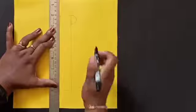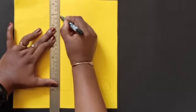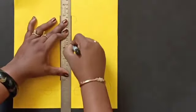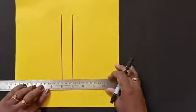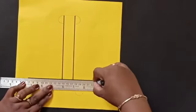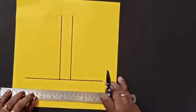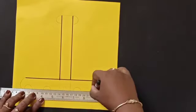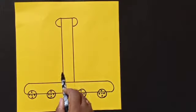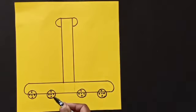Now we will give outline to this with the help of black sketch pen. In this way we will give outline to the lines that we have drawn with pencil and here, inside the tires, we will give this design.